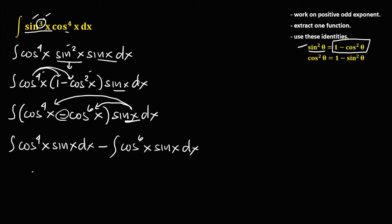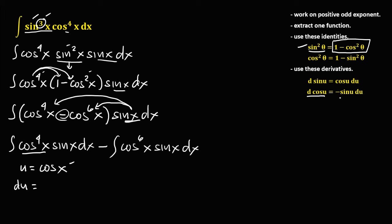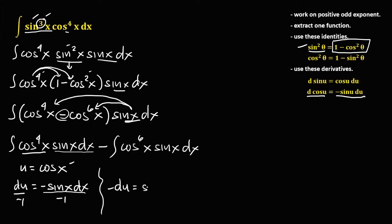Using u-substitution, let u = cos x. Then du is the derivative of cos x. Since the derivative of cos x is negative sin x dx, we divide both sides by negative 1, so negative du equals positive sin x dx.